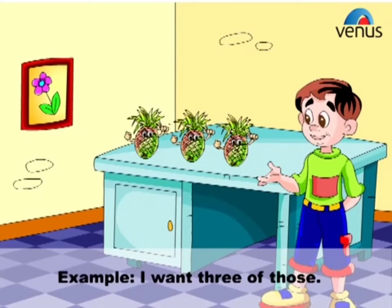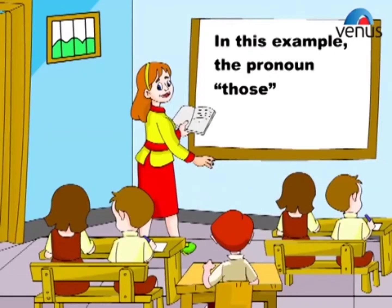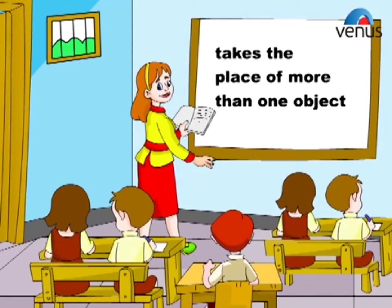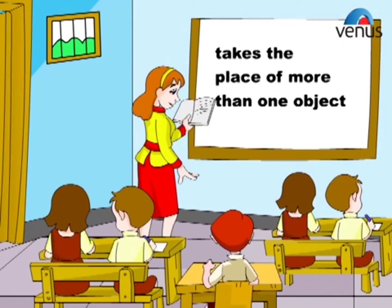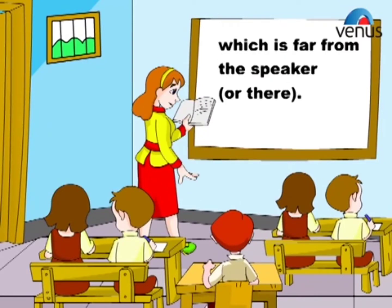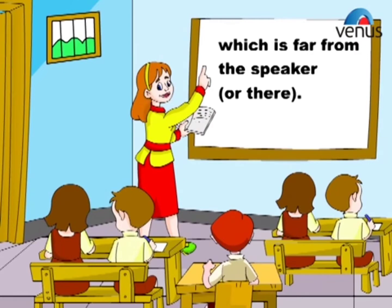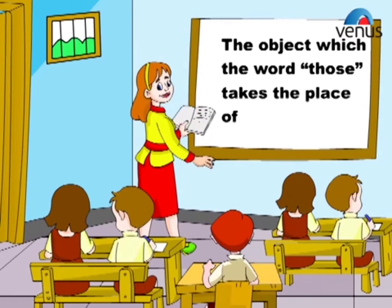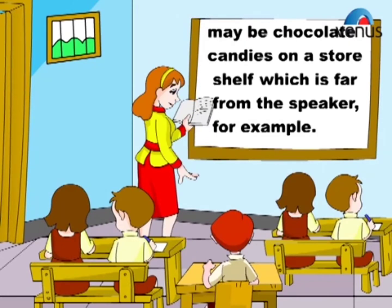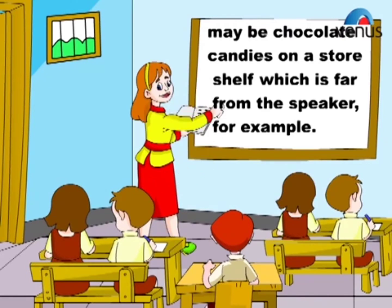Example: I want three of those. In this example, the pronoun 'those' takes the place of more than one object which is far from the speaker, or there. The object may be chocolate candies on a store shelf which is far from the speaker, for example.